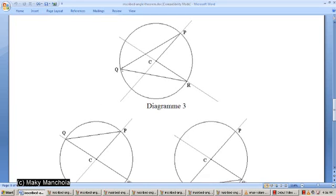The second case is where points P and Q are on opposite sides of line CR, as well as Q and R are on opposite sides of line CP.